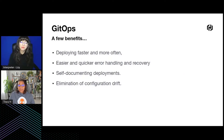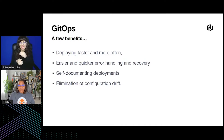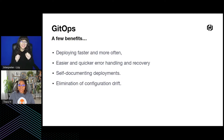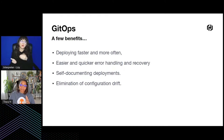Additionally, there are some benefits of using GitOps: deploying faster and more often, easier and quicker error handling and recovery, self-documenting deployments, and most importantly, the complete elimination of configuration drift. The benefits can make it easier to handle applications and allow teams to deliver quality software faster.